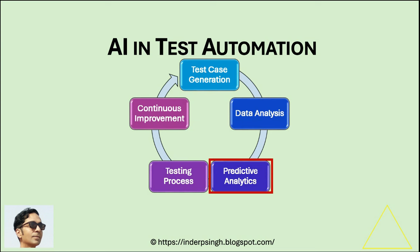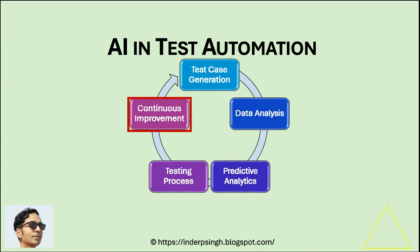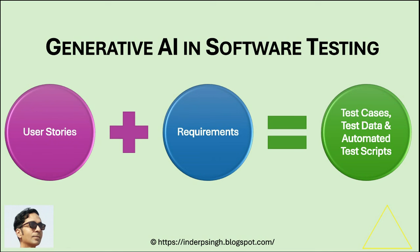This phase has the valuable impact of AI on test automation. The enhanced testing process integrates all insights into the testing workflow to optimize testing efforts, and a continuous improvement feedback loop provides ongoing improvement to AI in testing. Generative AI in software testing is a powerful technique that can help you generate test cases and test data automatically. For example, Generative AI for testing can input user stories and output detailed test cases that cover a wide range of scenarios.